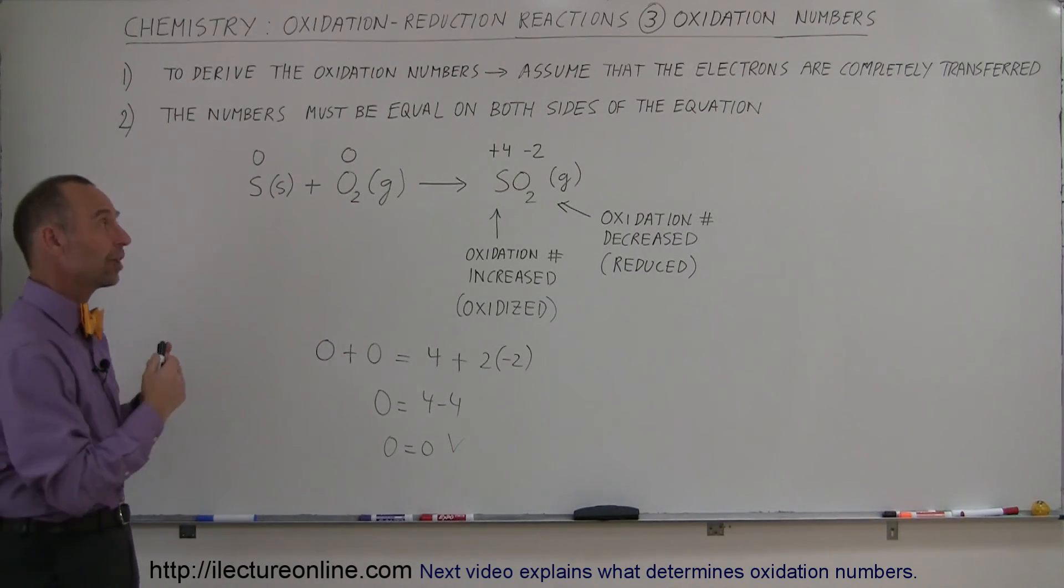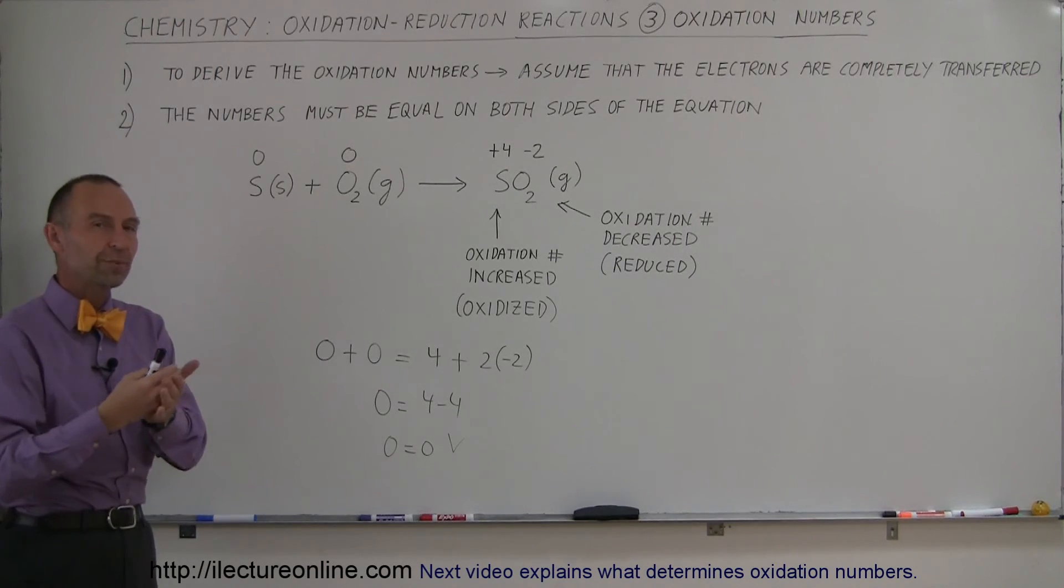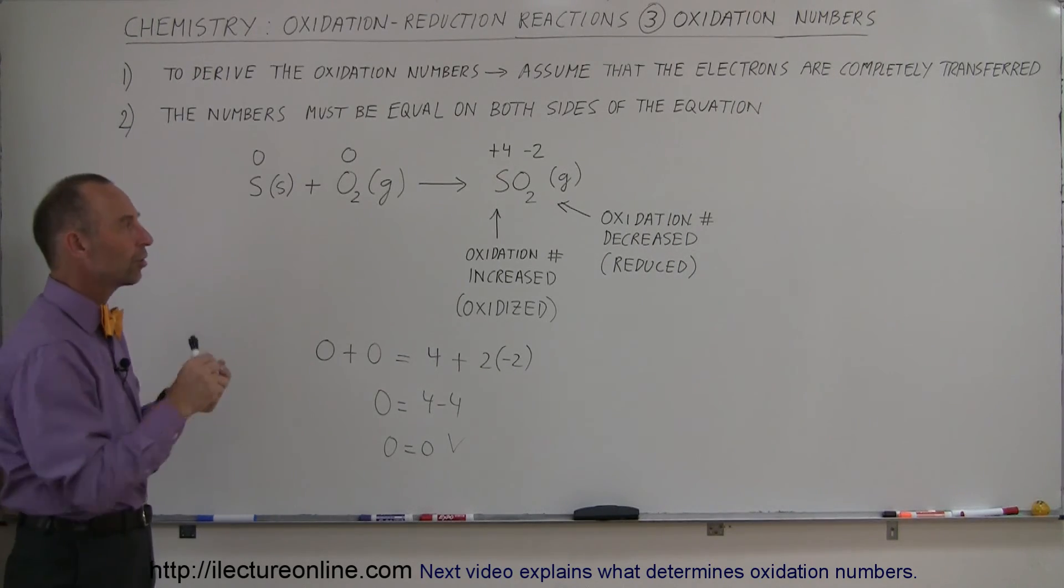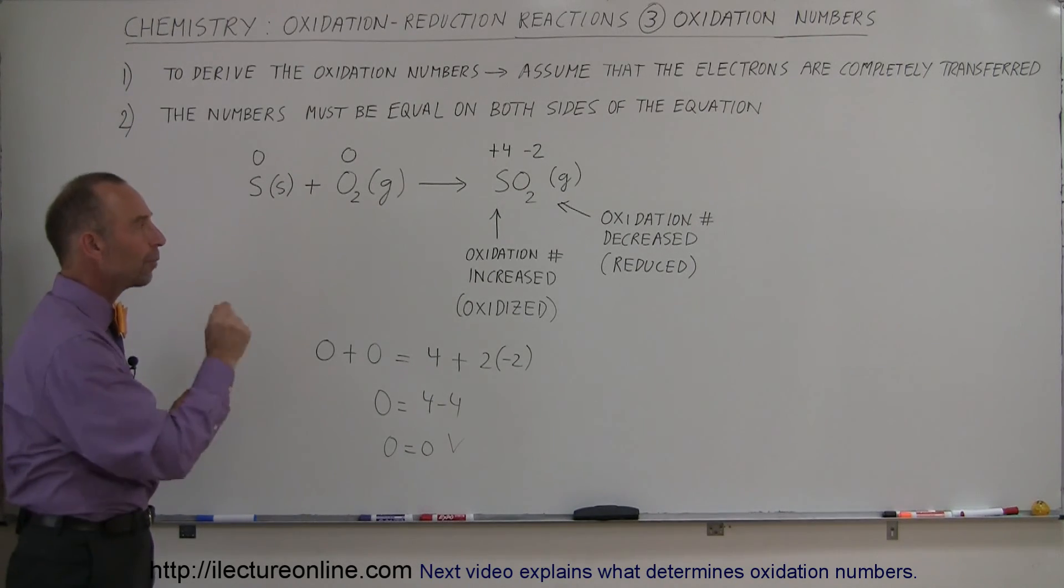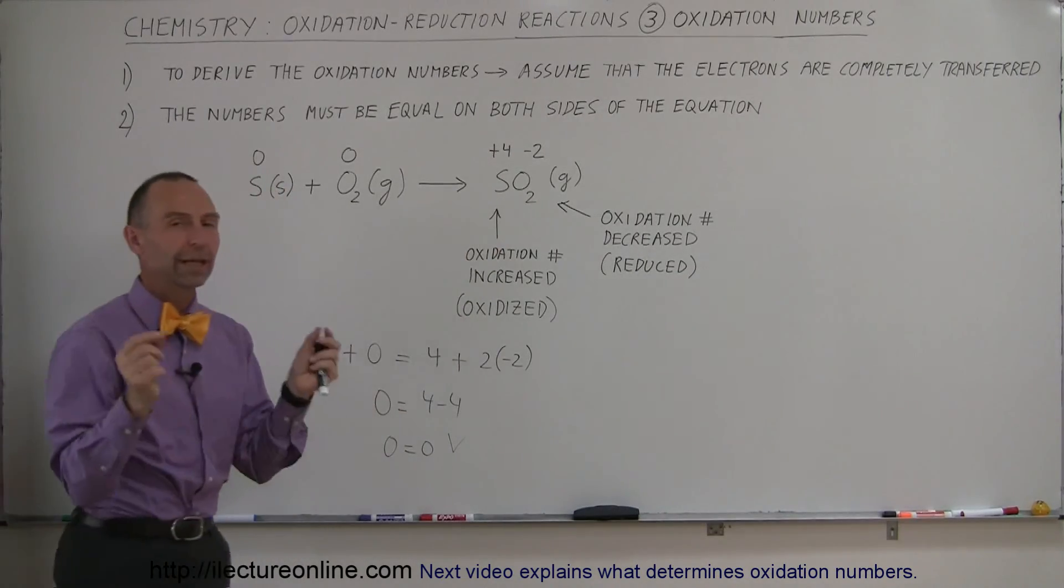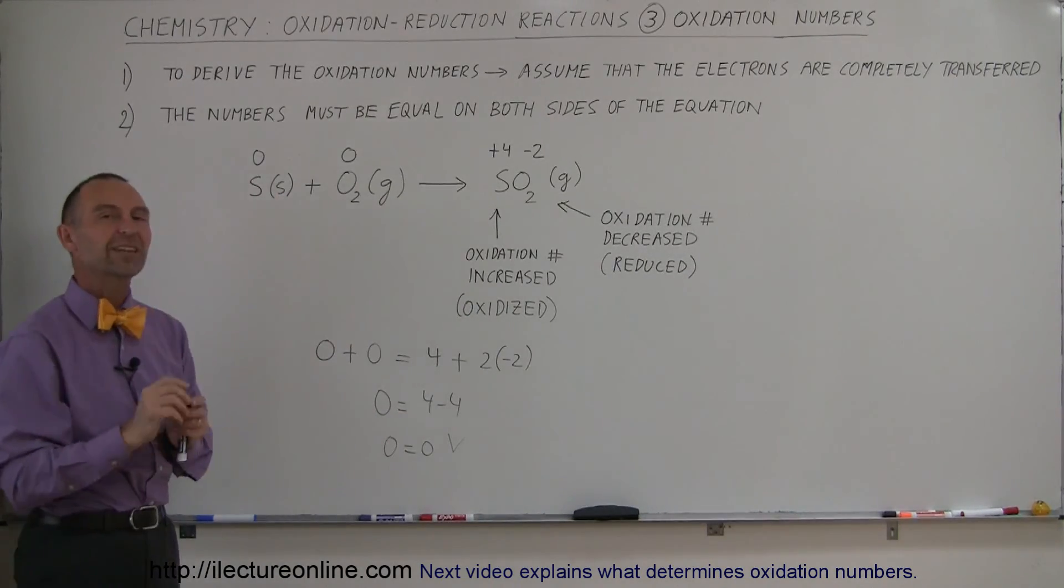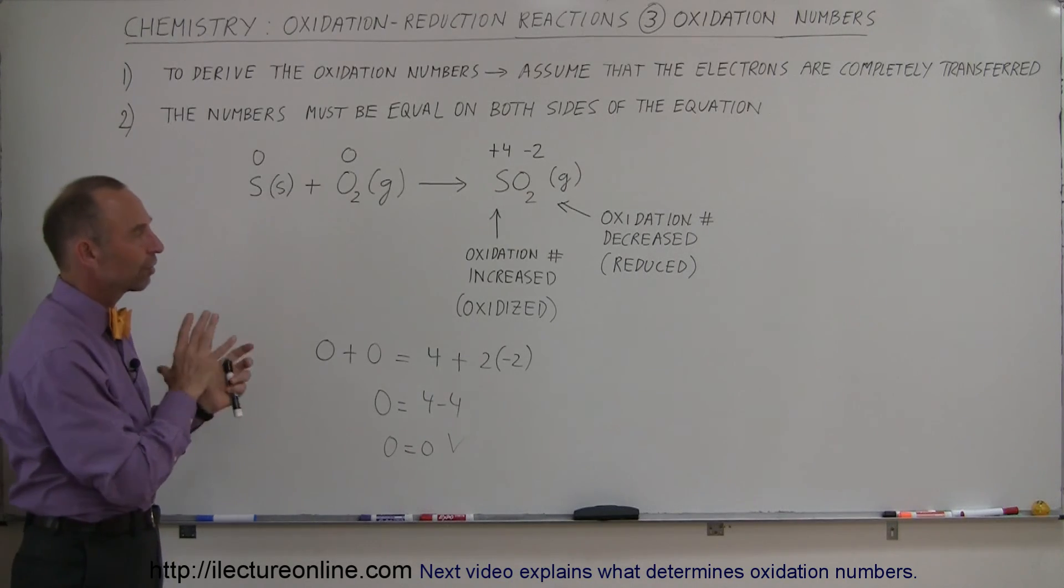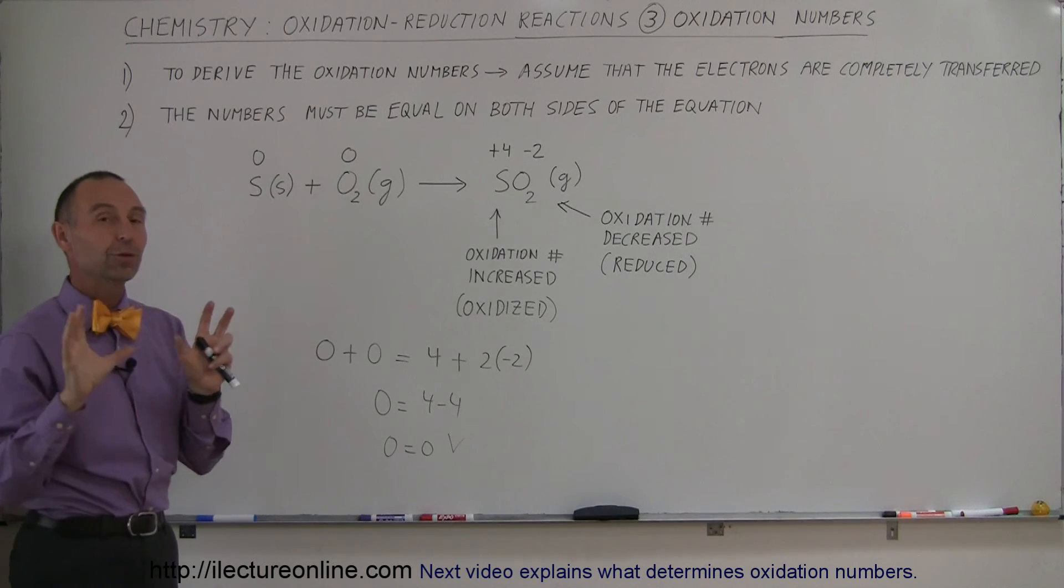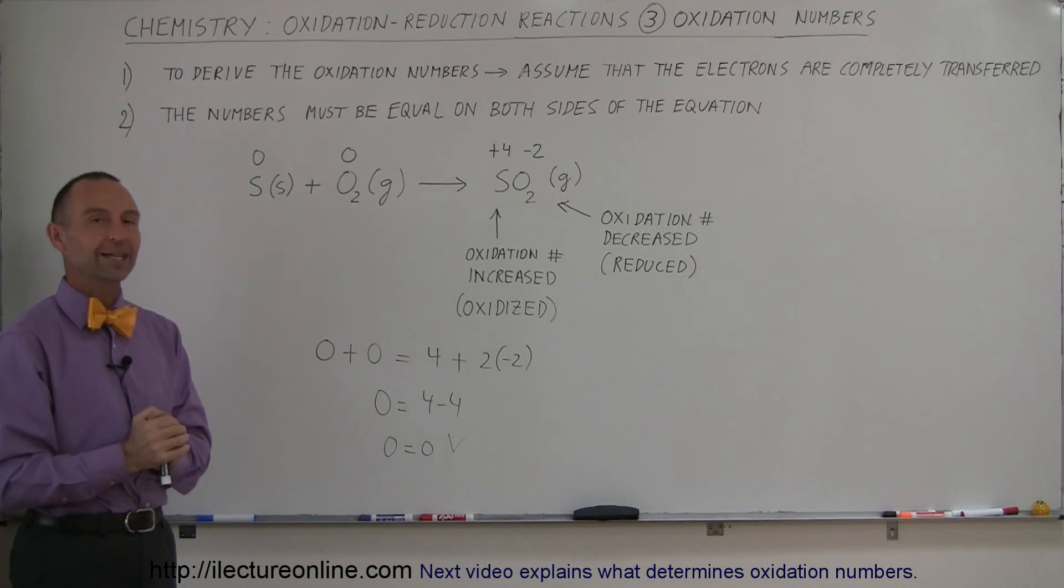Hopefully that helps you in understanding what oxidation numbers are. They're simply a way to realize how atoms react with each other and how electrons are transferred in a theoretical sense, not necessarily a practical sense. In true nature, when you see this particular molecule, the electrons are being shared to some extent - it's not 100% ionic, so it's not a complete donation from one atom to the other. But in order to keep the oxidation numbers straight, that's the assumption we make.